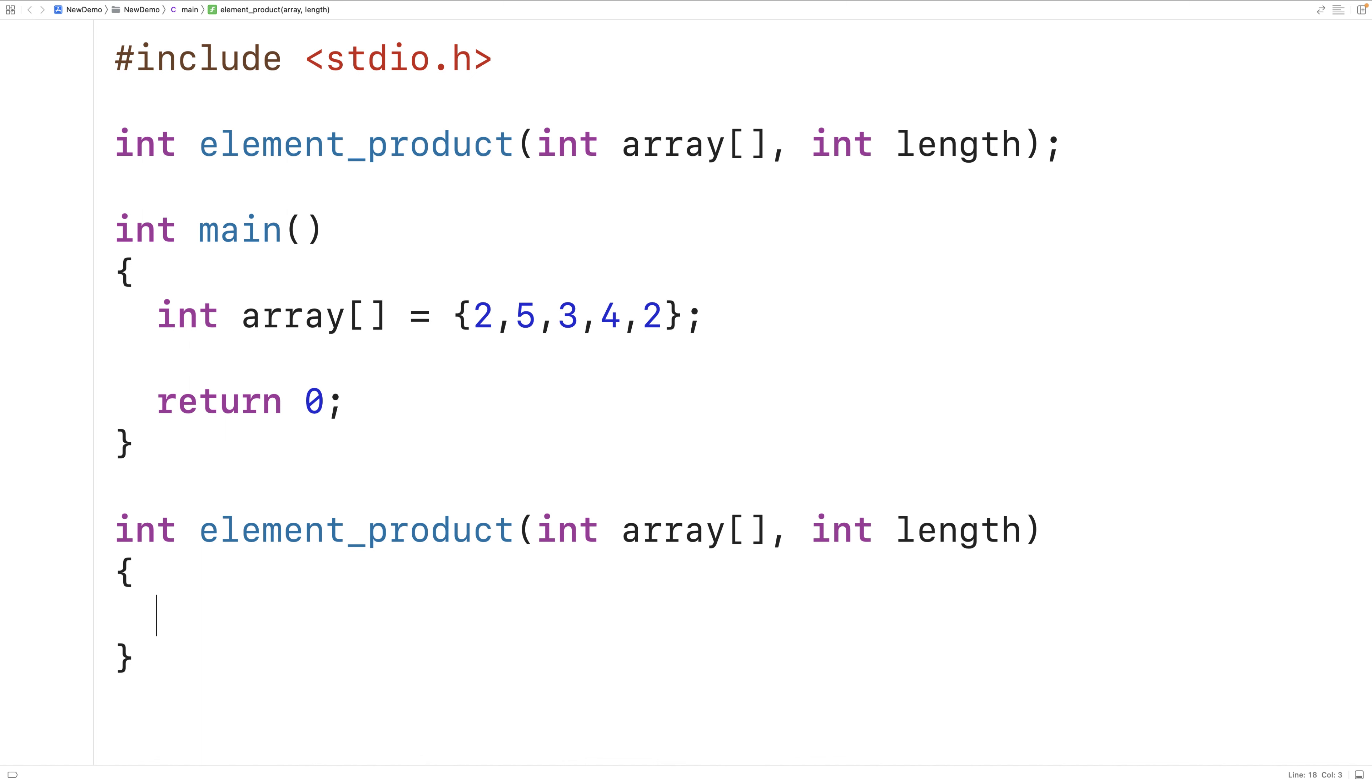To help us build the product, we'll declare an int variable called product and initialize it to one. We're going to loop through the array one element at a time and multiply that array element by product and store the result back into product. Because product is initialized to one, the first array element will be multiplied by one and we'll just get back the array element itself, which is exactly what we want.